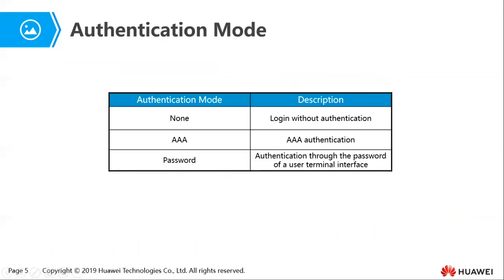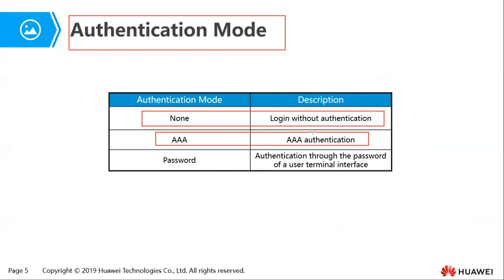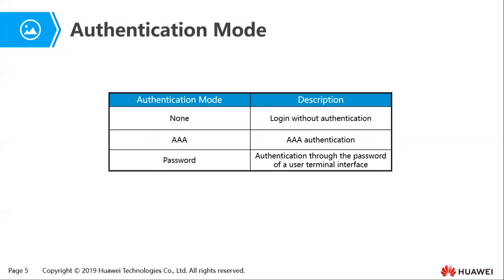Telnet supports one of three authentication modes. Non-authentication is when a person can telnet into your server without being authenticated — this is risky and should never be used. Then there is AAA authentication, which offers authentication, authorization, and accounting; most of the time you'll need a username and a password. Then there is password authentication, where you only need a password — no username. The risk with password authentication is that you cannot know who did what, whereas with AAA you can check the log files to account for who did what.